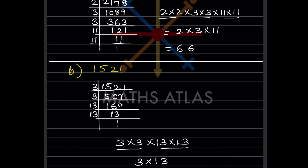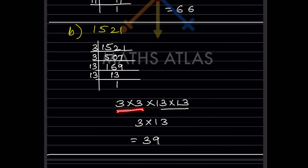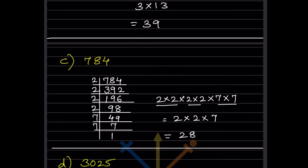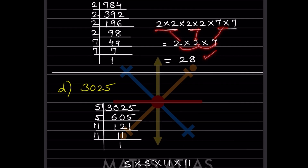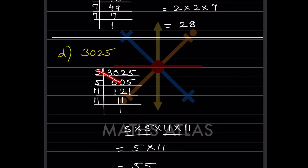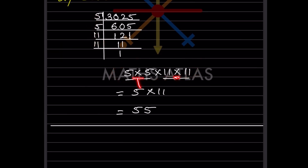For the second number, it is not divisible by 2, so we use 3. Dividing by 3 twice and then by 13 twice gives factors 3, 3, 13, 13. Pairing gives 3×13 = 39. For the third number, dividing by 2 and then 7 gives pairs, so the square root is 5×11 = 55.